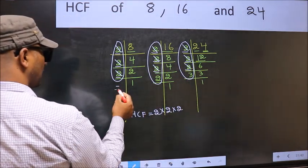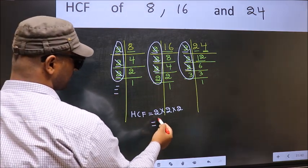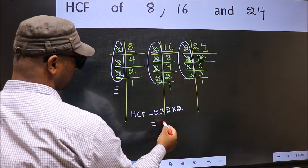No more numbers have been left out. Therefore HCF is 2 times 2 is 4 times 2 is 8. 8 is our HCF.